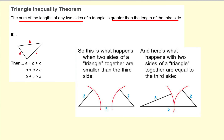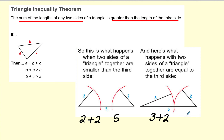Now let's talk about the Triangle Inequality Theorem. This tells us how three sides of a triangle will be. It says the sum of the lengths of any two sides of a triangle is greater than the length of the third side. For example, 2 and 2 do not make a triangle because 2 plus 2 is not greater than 5 — the triangle collapses. So the two sides always have to add up to more than the third.